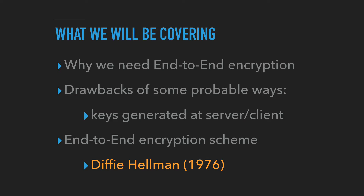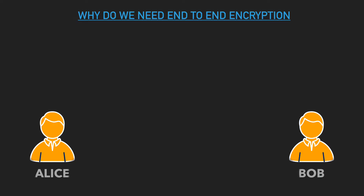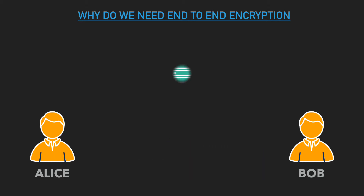The Diffie-Hellman scheme proposes a solution to generate a shared secret between two clients. So why do we need end-to-end encryption? Suppose we have two users, Alice and Bob, who both want to send messages to each other. Unless they are within NFC range, they cannot send messages directly without a third-party server. We want Alice and Bob to communicate even if they are in different parts of the world, so we will need a server.